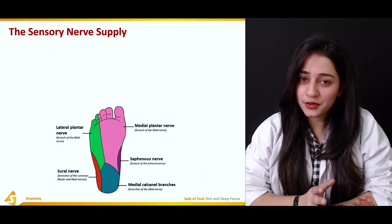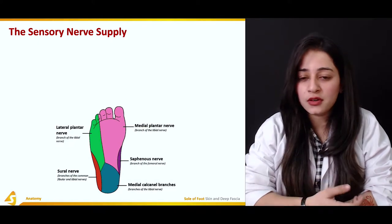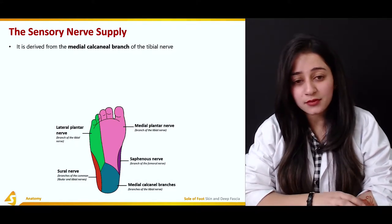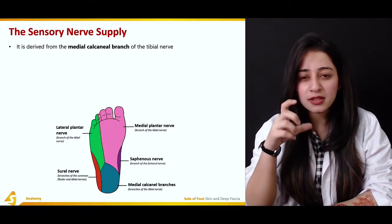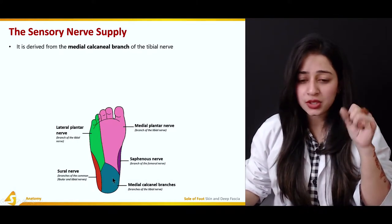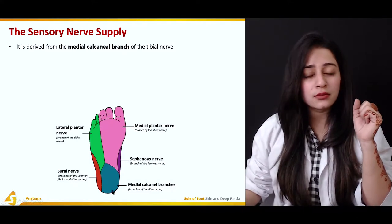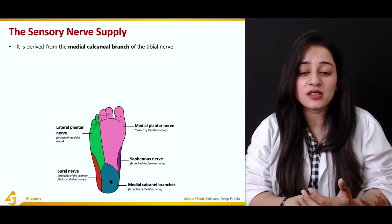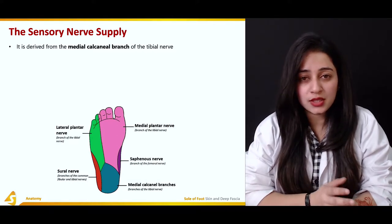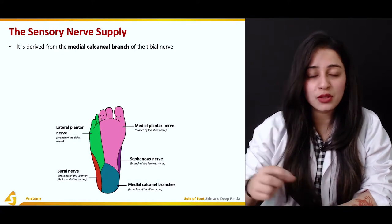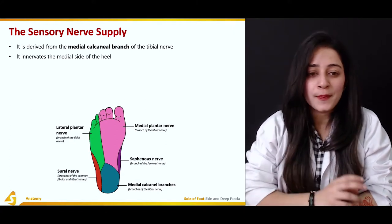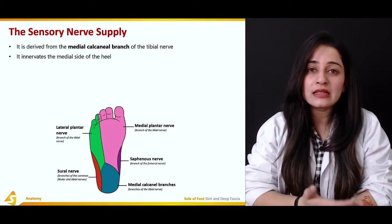The sensory nerve supply of the sole is derived from the medial calcaneal branch of the tibial nerve. This is named after the calcaneum bone — the big bone present in the heel portion. The tibial nerve, when it enters the foot, divides into multiple branches, one of which is the medial calcaneal branch. This branch innervates the medial aspect of the heel.